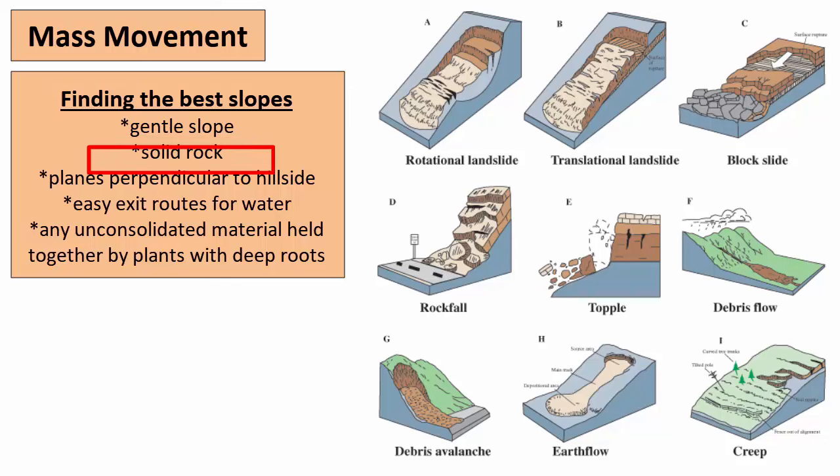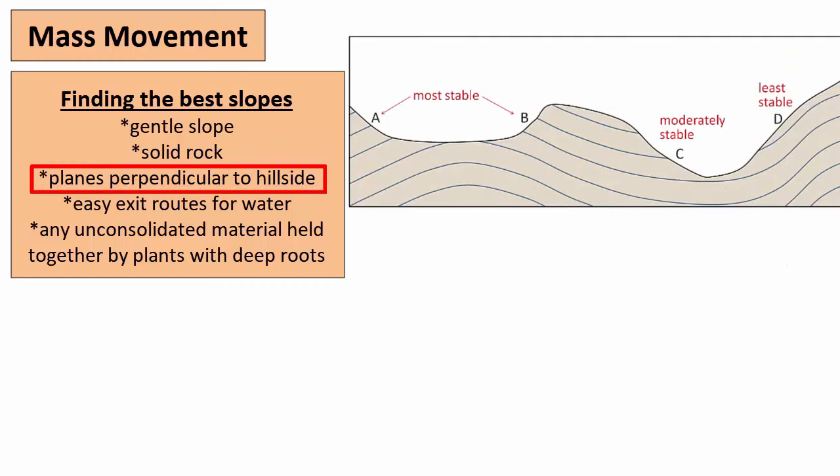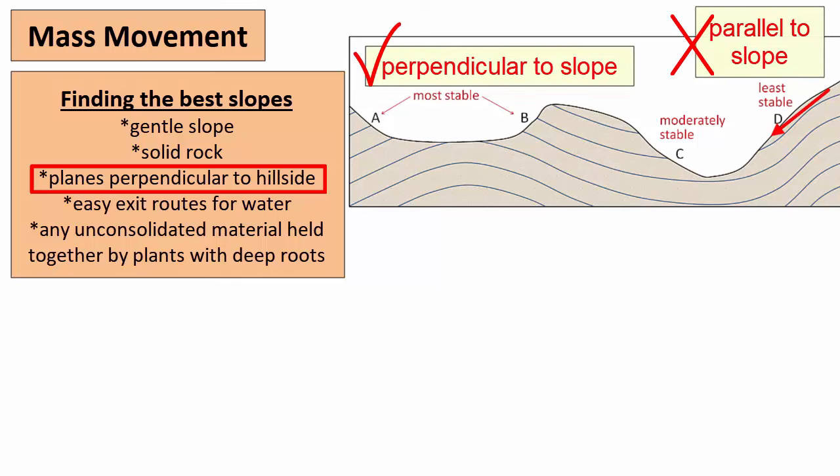Then look at the geologic structure of the hillside. If there are bedding foliation or fault planes are they parallel to the hillside? If so they're more likely to fail than those that are perpendicular to the hillside.